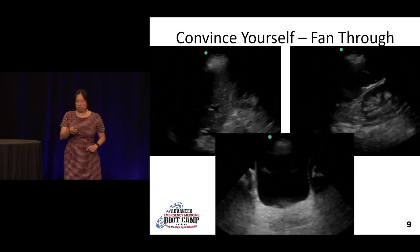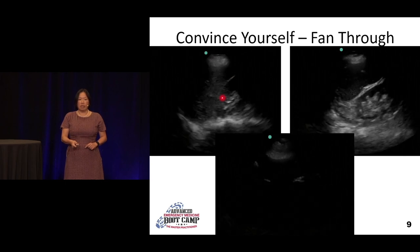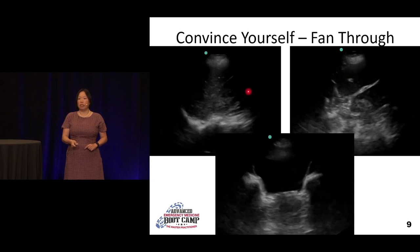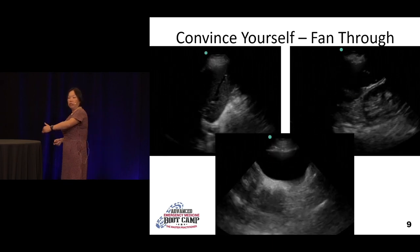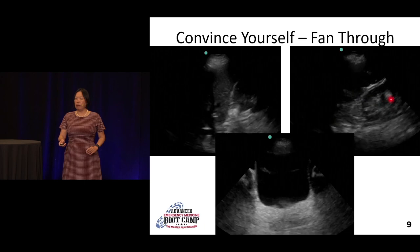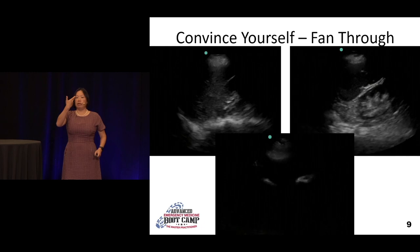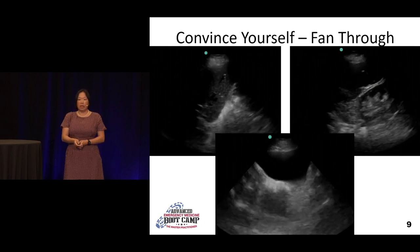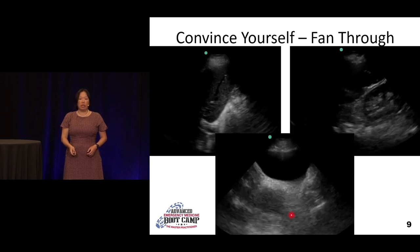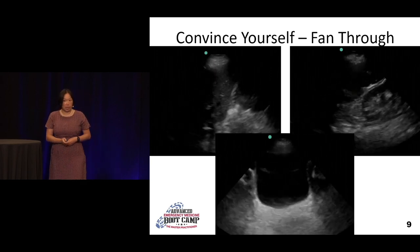Here are some pictures of the fanning. Here is the liver, here's the kidney — and as you fan through, you're looking until the kidney disappears. You're fanning anteriorly toward the front of the belly, then fanning posteriorly. Same thing on the left side. And in the bladder view, you fan superiorly toward the head and inferiorly toward the feet, so you're going to see the prostate or uterus come in and out as you're scanning through the entire space.